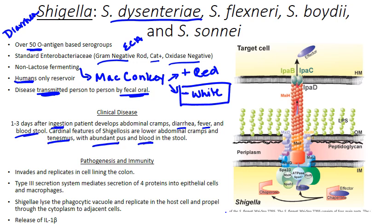So how does this happen? The pathogen is able to invade and replicate in cells lining the colon. This bacterial infection is a facultative anaerobe, so it's able to reside inside a phagocyte. Once it's inside its vacuole, it can lyse that vacuole and replicate in the cytoplasm of the phagocyte. Then it can actually shoot its way through into an adjacent cell — and in doing so it avoids antibody detection because it never has to go extracellular in order to spread.